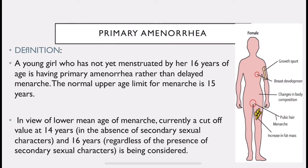Primary amenorrhea definition: if a girl of 16 years has not yet reached her menses, instead of saying delayed puberty, it is termed primary amenorrhea — that is, primary absence of menstruation. Menarche is the first menses.